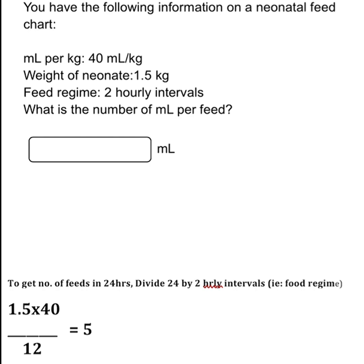The feed regime is two-hourly intervals, so to find the number of feeds in 24 hours you divide 24 by 2, which equals 12. So the calculation becomes 1.5 × 40 ÷ 12, and our answer is 5. You will not add the unit again because it's already attached to the answer box provided.